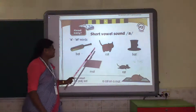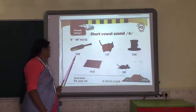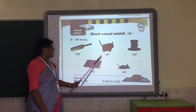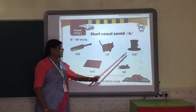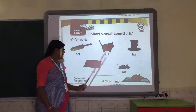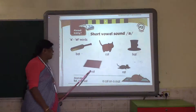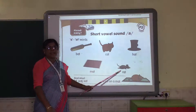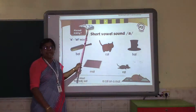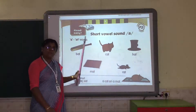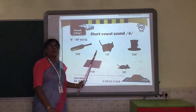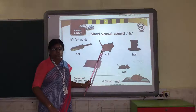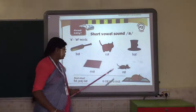See so many words we got! Bat, cat, hat, M-A-T mat, R-A-T rat. With the same A-T we have made so many new words. You also can do this, children.